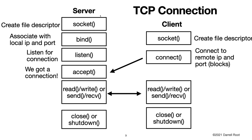A server process is a process that listens for inbound connections. There are multiple system calls we need to execute in order to listen for inbound connections and then communicate on the connection. First we use the socket system call which creates a file descriptor. Then we bind the socket descriptor to a local IP address and port. Then we listen for inbound connections and then we accept the connection. Once we accept a connection we can read or write data, or we can use the send or receive functions. Then when we're done we can close or shut down the connection.